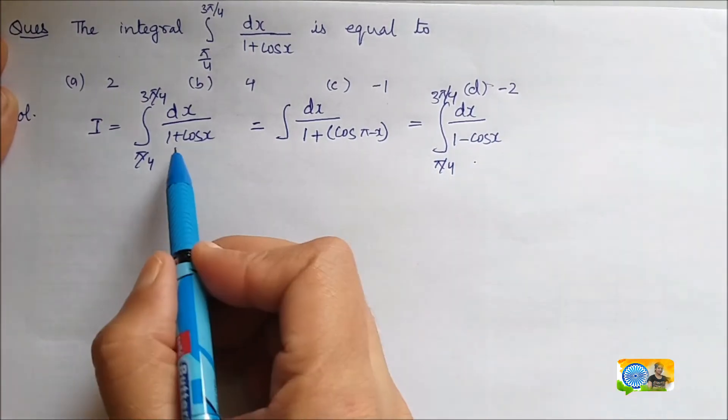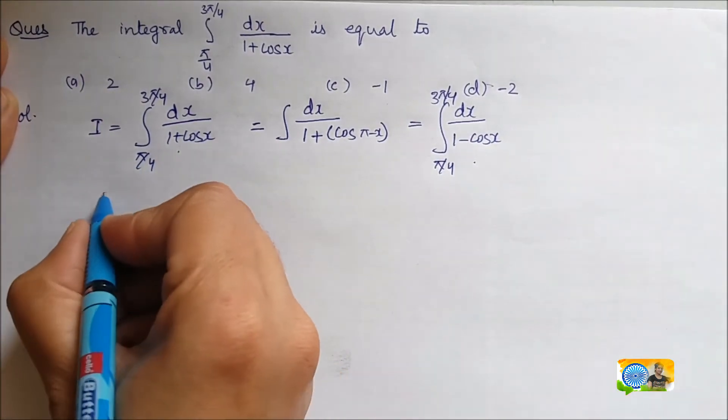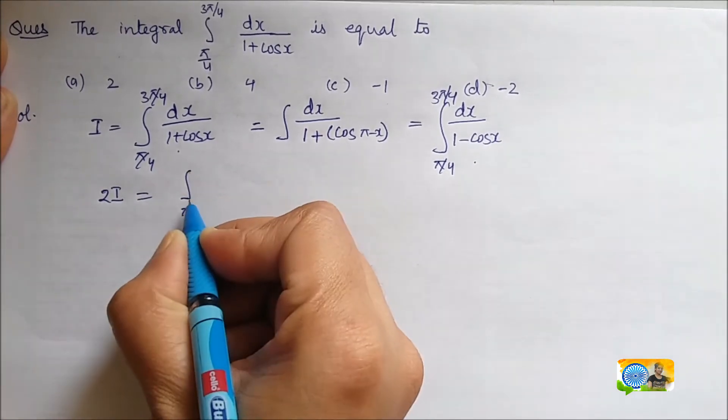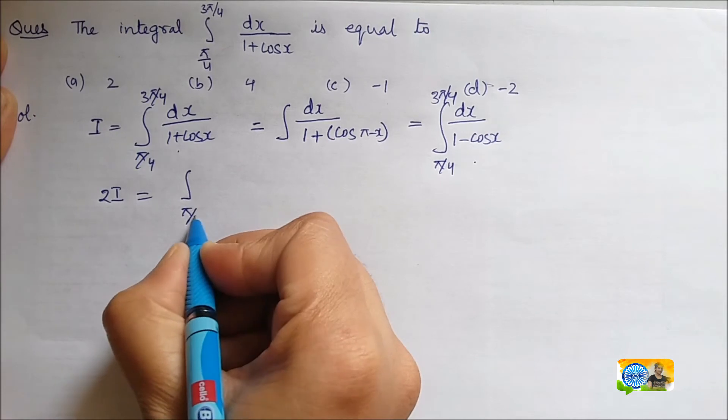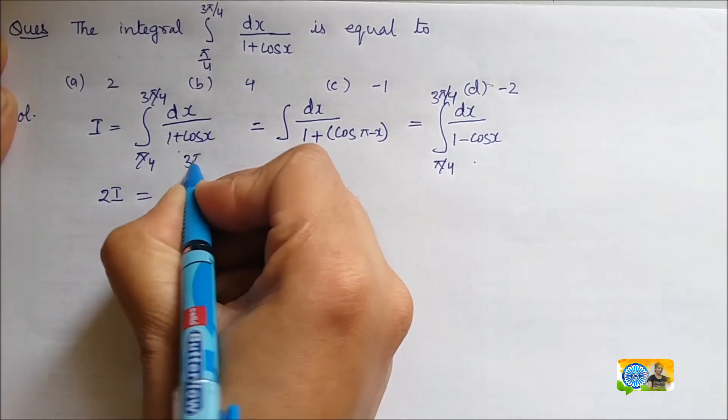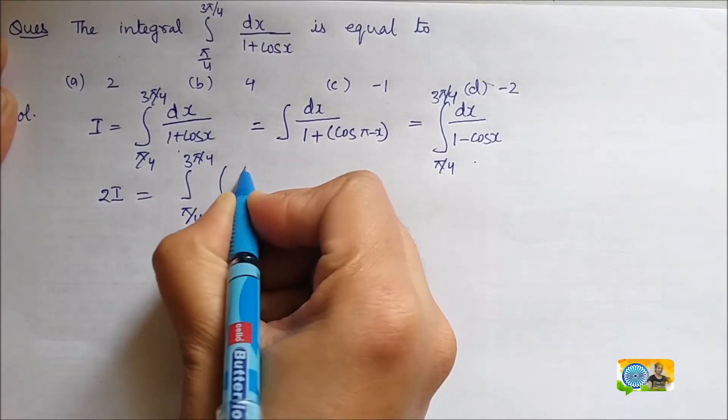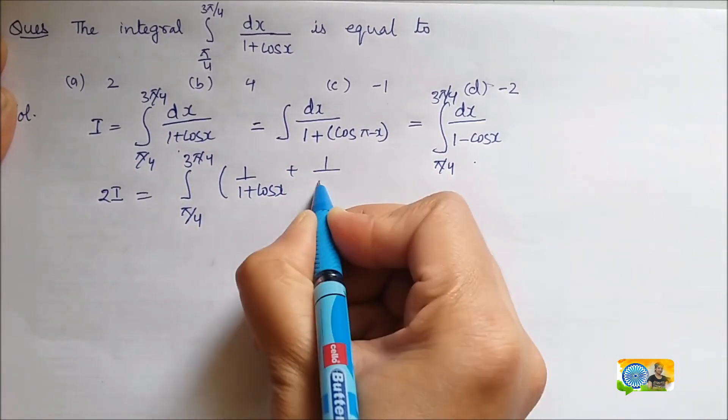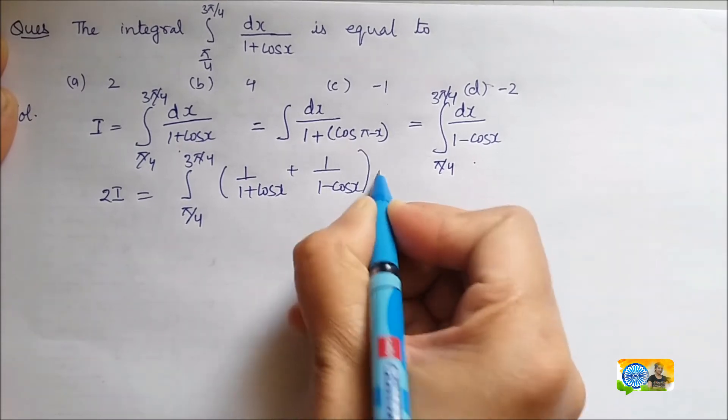If I add this integral and this integral, I will get 2I on the left hand side and on right hand side, I have this integral between the limits pi by 4 to 3 pi by 4. I have 1 upon 1 plus cos x and I have 1 upon 1 minus cos x dx.